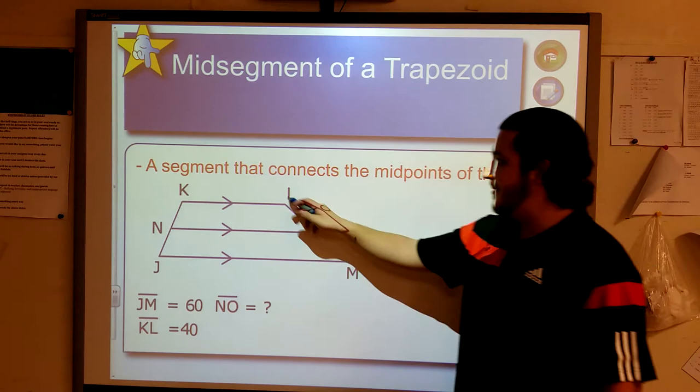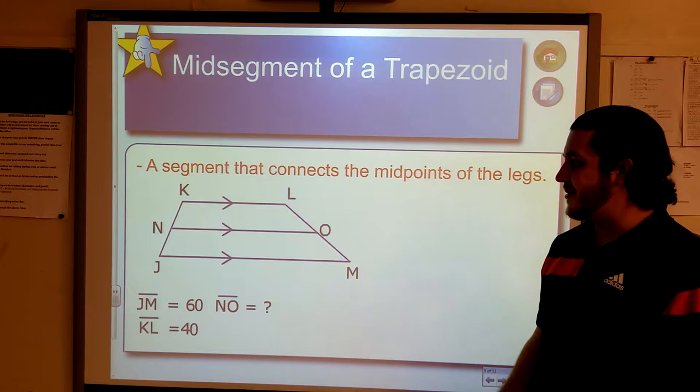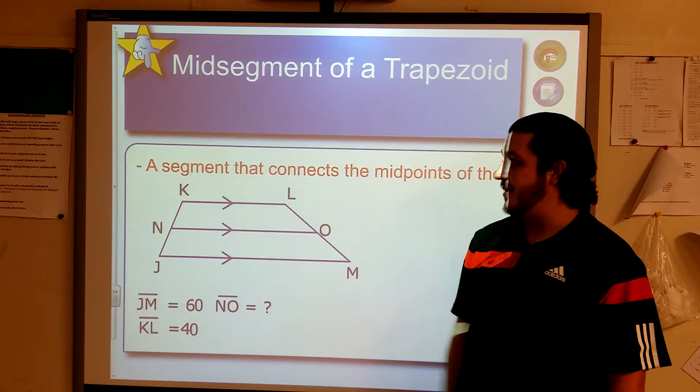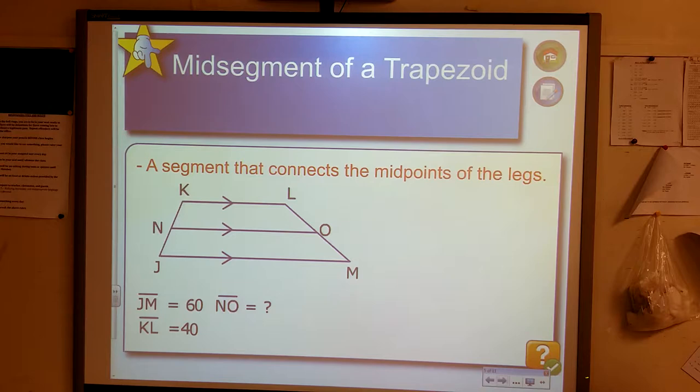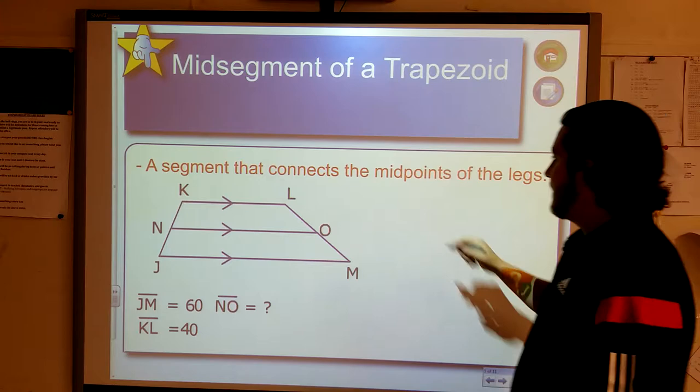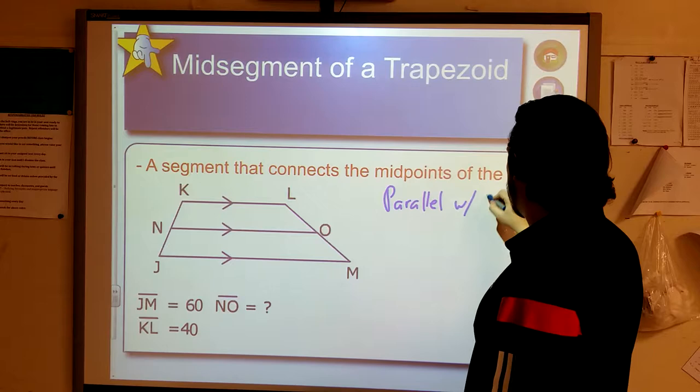Mid-segments of a trapezoid. You guys remember talking about mid-segments a little bit before, but now we're talking about mid-segment of a trapezoid. A mid-segment is a segment that connects the mid-points of two legs in our trapezoid. So, these are our legs here, KJ and LM. We connect those two mid-points, the mid-points of each of these, and we create line NO. NO is going to be parallel with KL and JM.